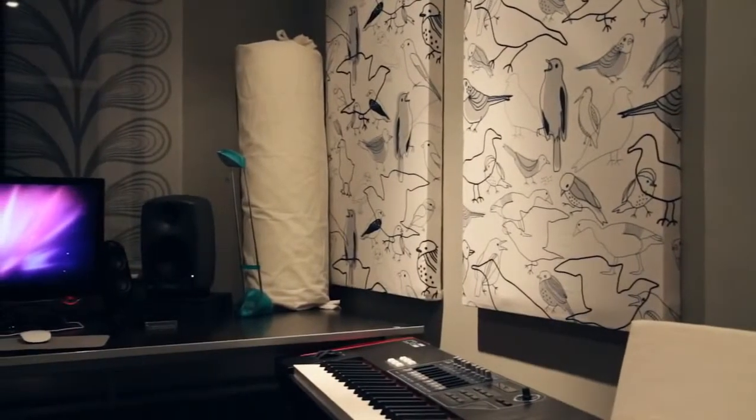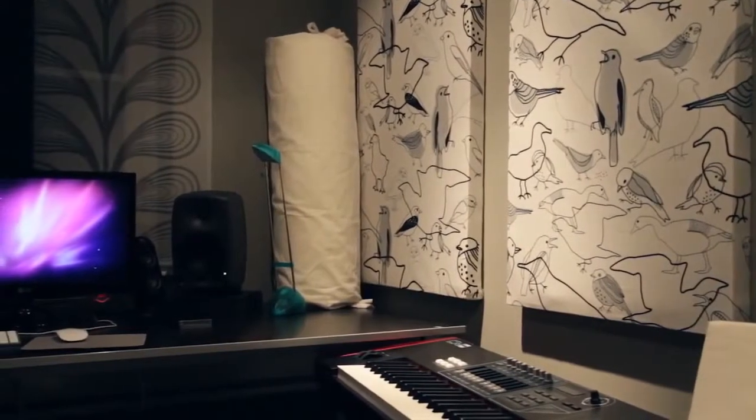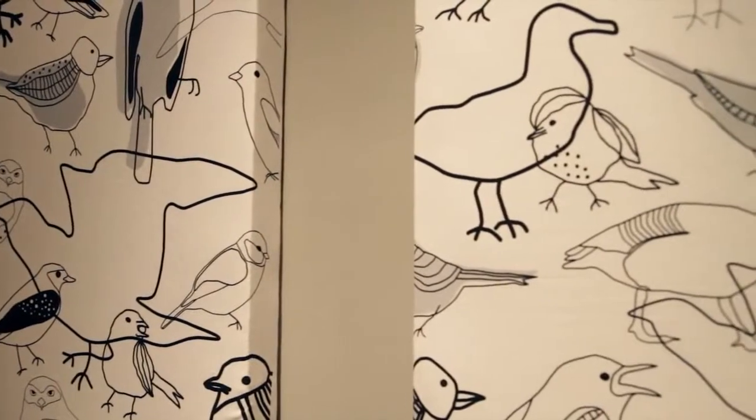This short tutorial will show you how to make acoustic wall panels using a simple wooden frame and rock wall insulation. These can be made for under £15 per panel, a big saving on purchasing them already made.